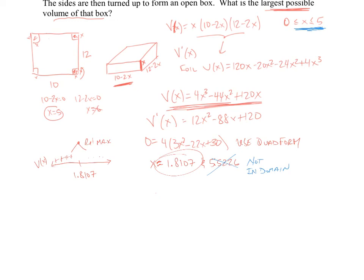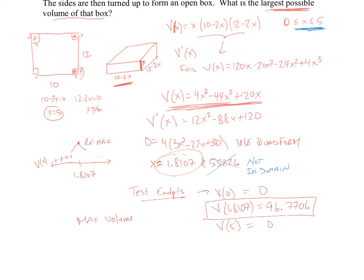All right. So now what do we do? Well, that's not quite my answer. I don't know that's my answer yet. I need to test endpoints. So we always have to test our endpoints. And in this case, I'm going to test v of 0, v of 1.8107, and I'm going to test v of 5. And you put this back into the original. Well, v of 0 just comes out to be 0. v of 1.8107 comes out to be 96.7706. And v of 5 comes out to be 0 as well.